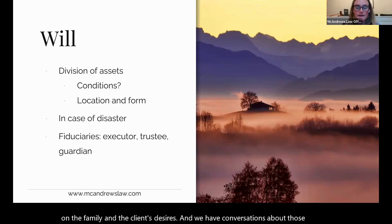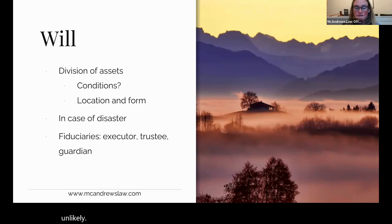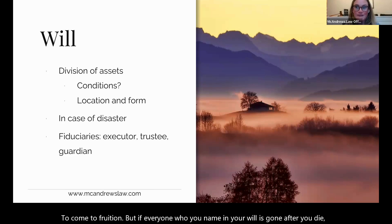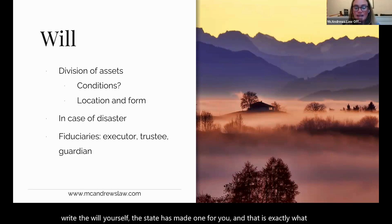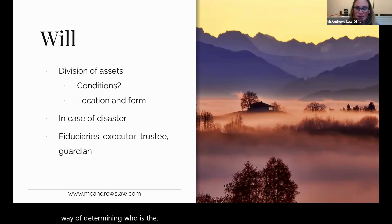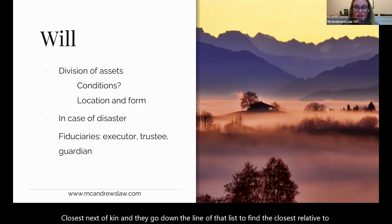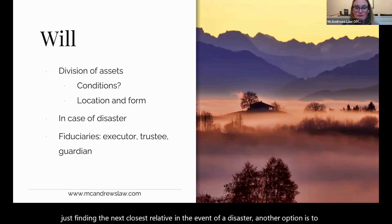You also want to think about what happens in the event of a disaster — very unlikely circumstances, but if everyone you name in your will is gone after you die, what would you like to have happen? The default is for your assets to go to your intestate heirs. Everyone dies with a will: if you don't write it yourself, the state has made one for you. Each state has their own list of intestate heirs — the closest next of kin. If you're not comfortable with that, another option is to name a charity.